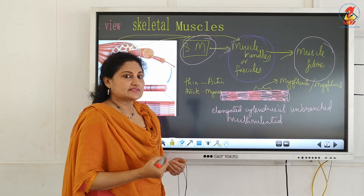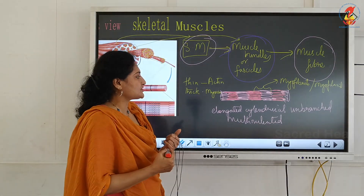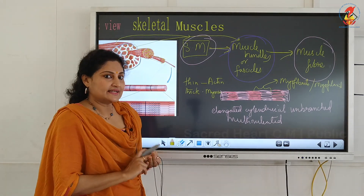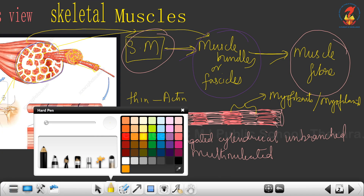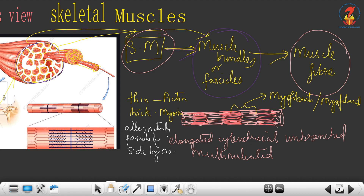The thin filaments are called actin and the thick filaments are called myosin. The way they are arranged — they are arranged alternatively, parallelly, side by side with the edges overlapping. This arrangement is very, very relevant. They are arranged alternatively, parallelly, side by side with the edges overlapping.